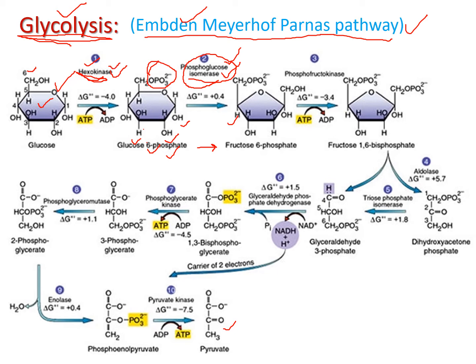The energy required for the phosphorylation in step one comes from ATP. ATP is hydrolyzed to form ADP, and the phosphate group is attached to the sixth carbon of glucose, forming glucose-6-phosphate. In step two, glucose-6-phosphate is converted into fructose-6-phosphate by phosphoglucoisomerase.